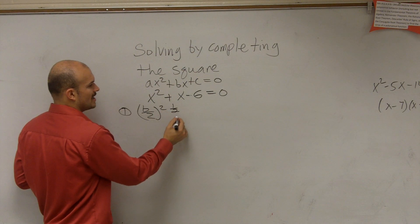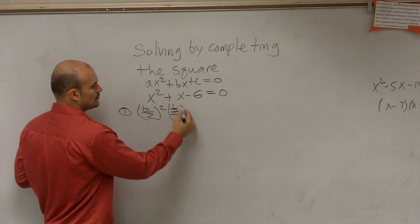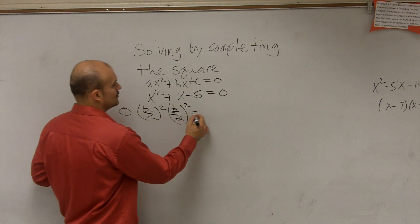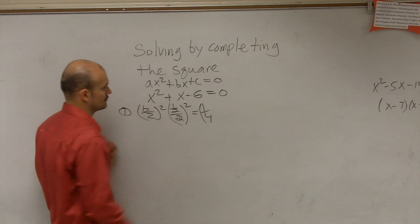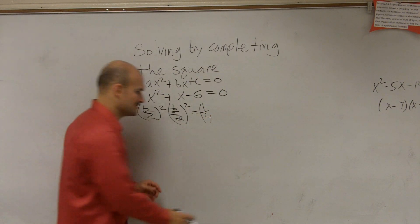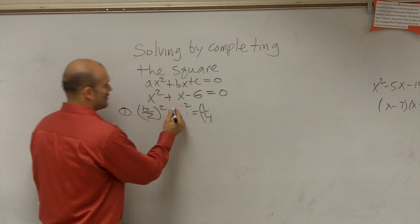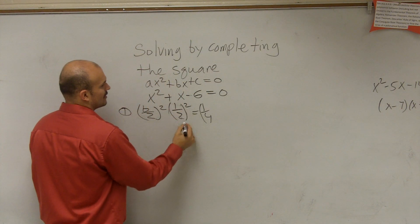So you do b divided by 2 squared. So I have 1 divided by 2 squared. 1 divided by 2 is 1 half. I'm sorry, 1 divided by 2. I'm thinking ahead.